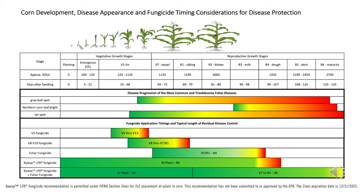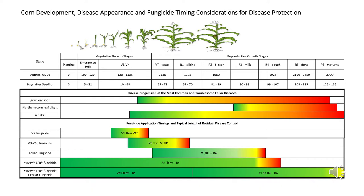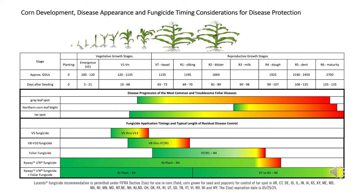And then we launched Zyway LFR fungicide — an at-plant application. As soon as the corn germinates and starts to grow, it begins to pick up the product and translocate it upwards into the foliage. At plant, we're seeing levels of flutriafol in the plant at least through R4 to provide disease protection. We also have Zyway LFR applied at plant and then overlapped with a foliar fungicide, so we know if we make that at-plant application we could get protection through R4, and in the case of southern rust and tar spot which come in late, we can really use scouting to determine when to make that second foliar application.